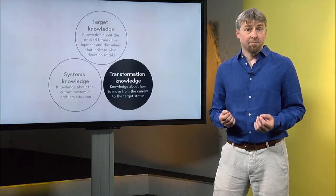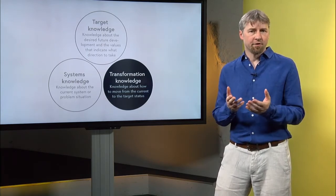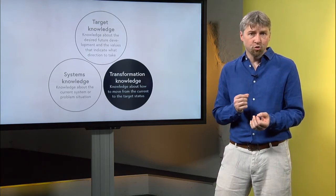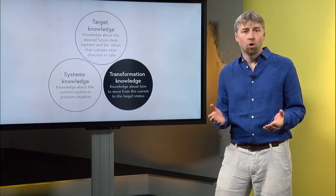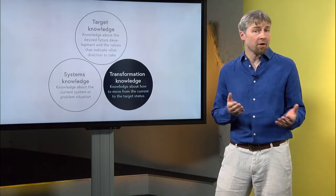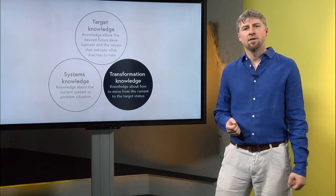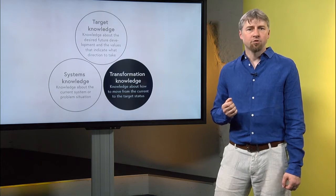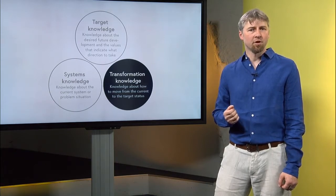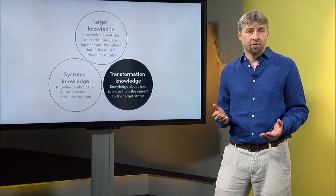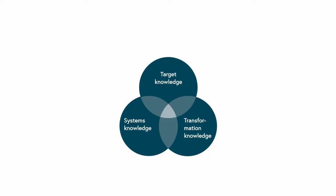While all three types are important, a specific project might focus more on one or two types, as other knowledge may already be generated by other projects or actors. While it is possible to think of them as separate items, they are interdependent. For example, transformation knowledge would be of limited use or even dangerous if not oriented towards desirable targets and based on systems knowledge.